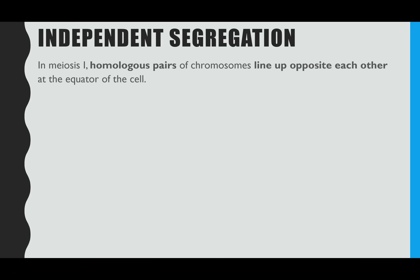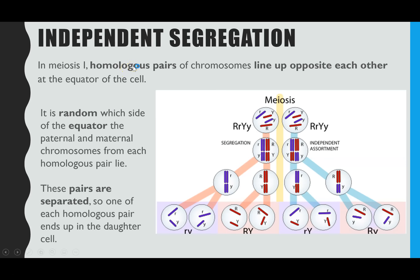For independent segregation: in meiosis one, homologous pairs line up opposite each other at the equator — the middle of the cell. A homologous pair means two chromosomes which have exactly the same genes but different alleles — your maternal and paternal versions. They line up opposite each other, but it's random which side of the equator they end up on. You could have all paternal chromosomes on one side, or a random mix on either side.